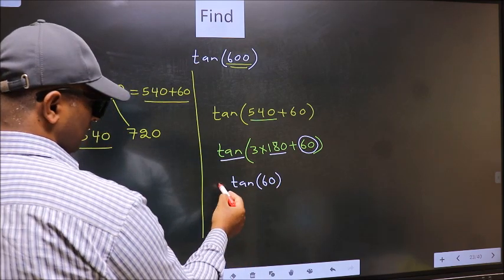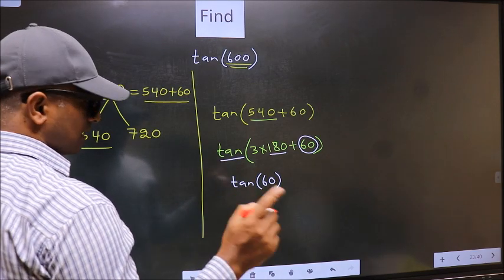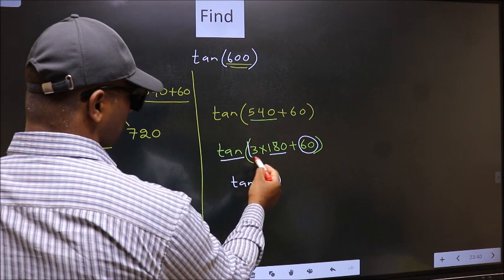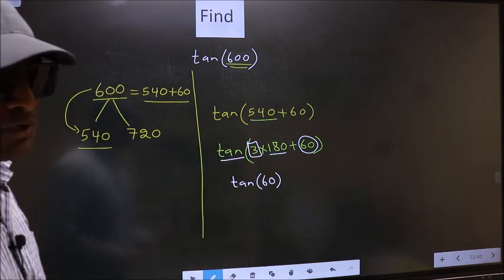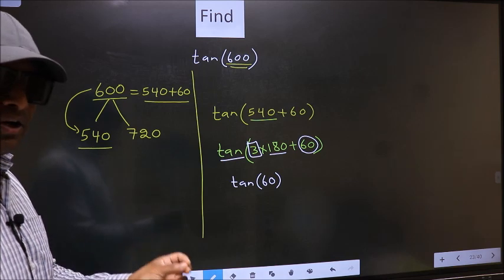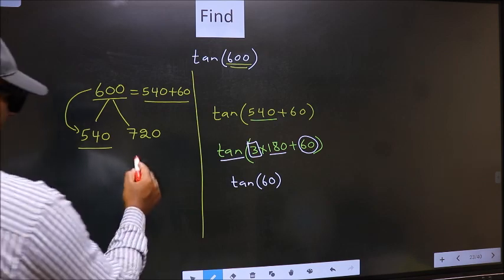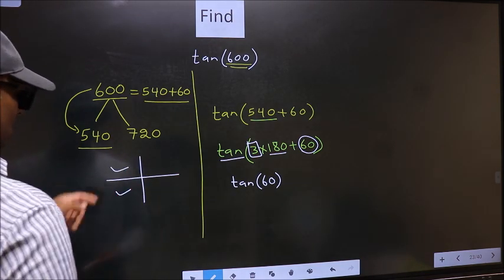Now the question is: will we get here plus or minus? To answer that, we should look at the number before 180—that is 3. 3 is odd, and all the odd multiples of 180 lie in either the second or the third quadrant.